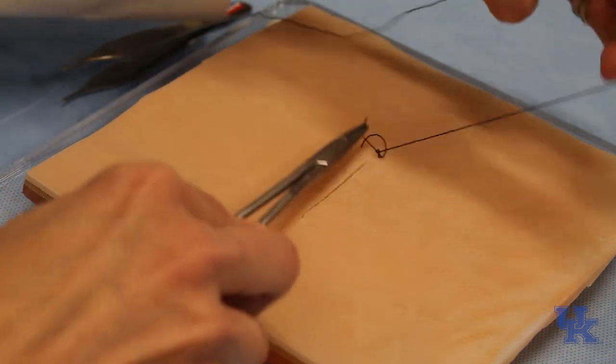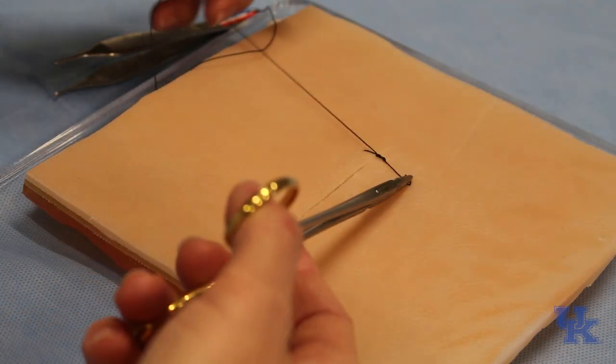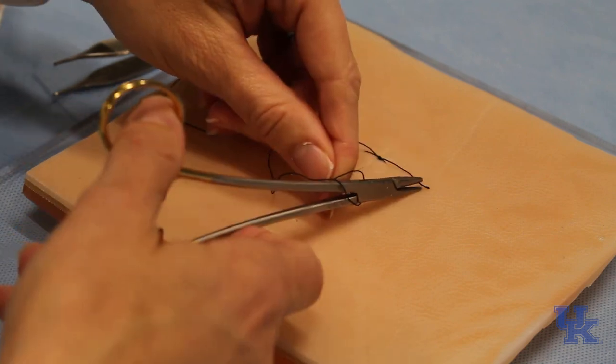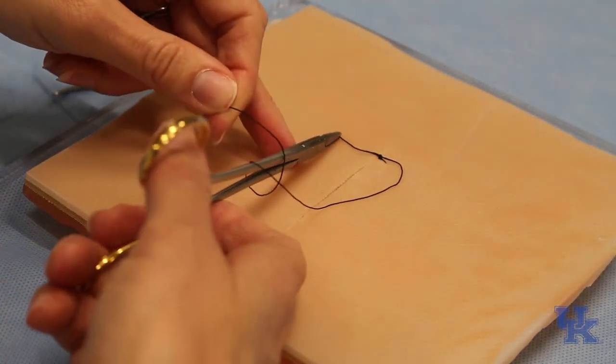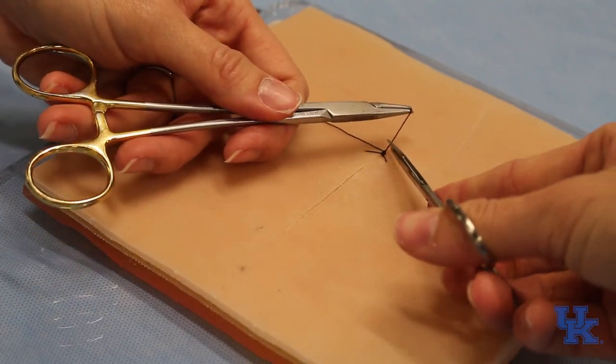The way that we do this differently than the simple interrupted is that instead of cutting both ends of the suture off right here, we're just going to cut off the end without the needle and do one extra throw on.